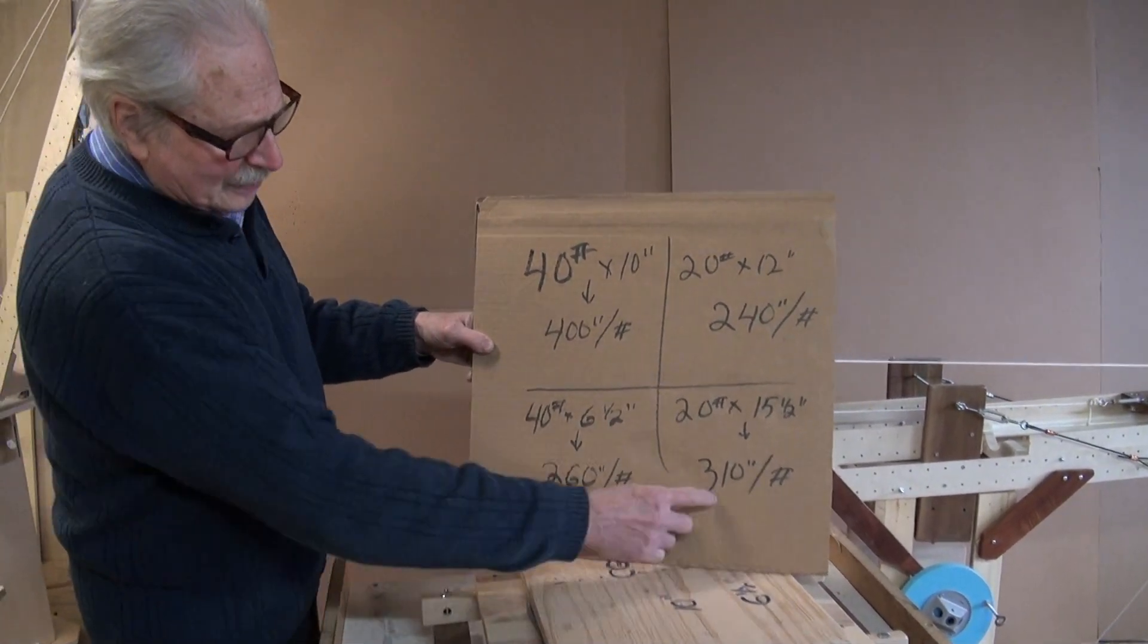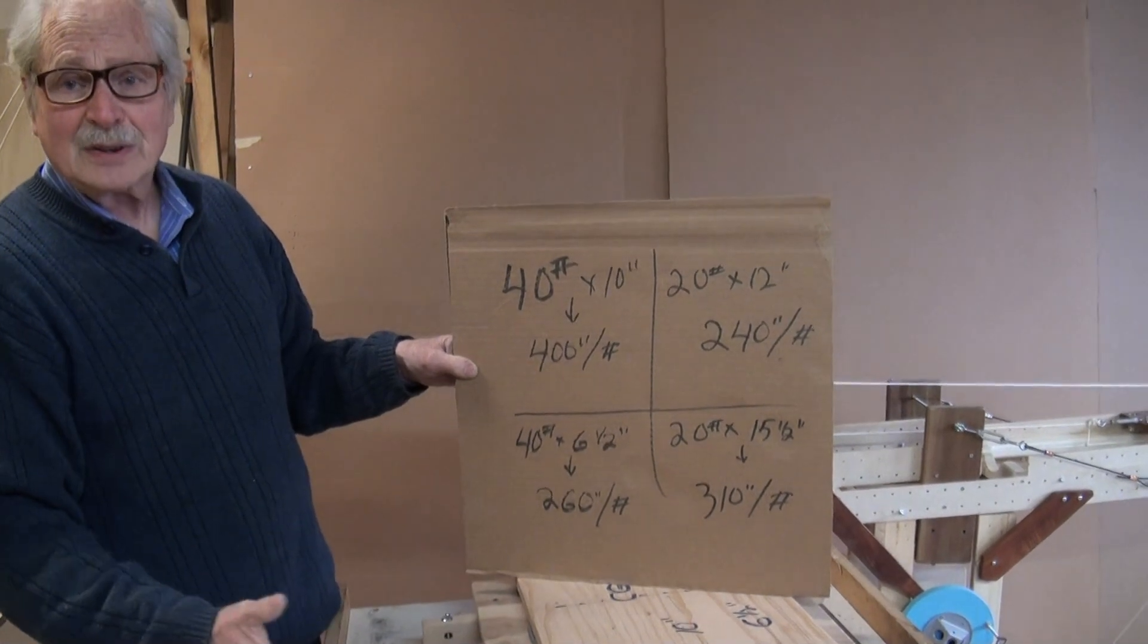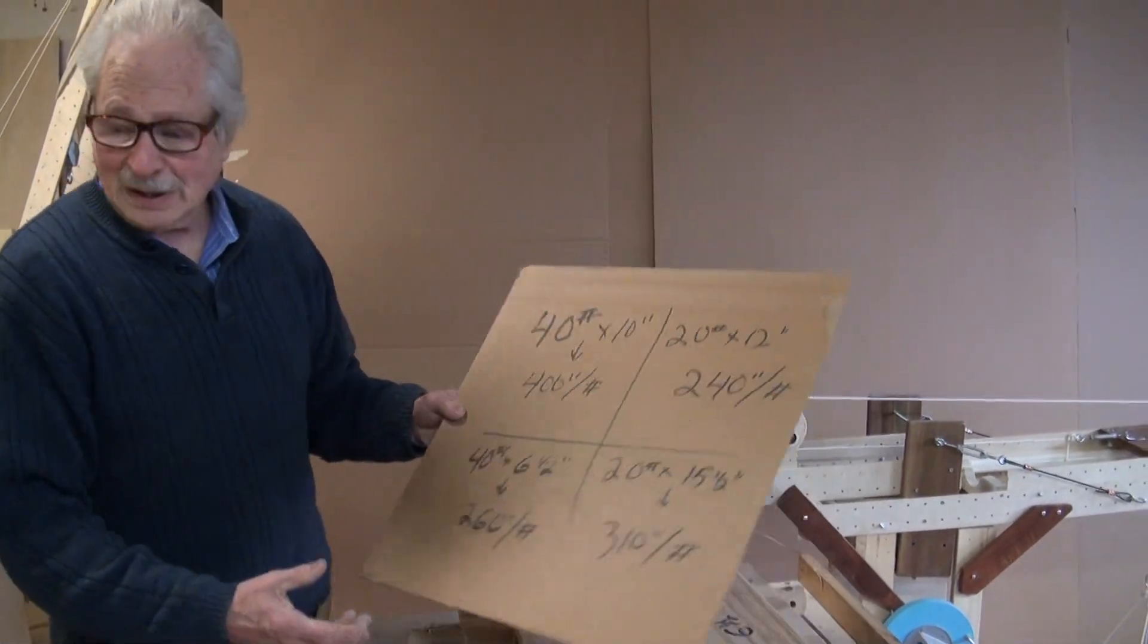So now, 310 is bigger than 260, tips over. It's really that simple.